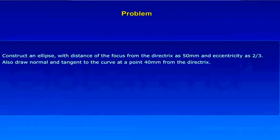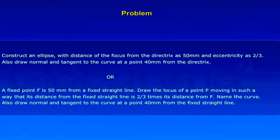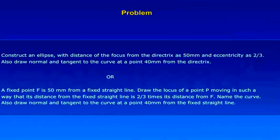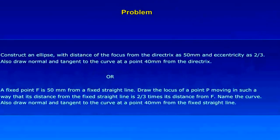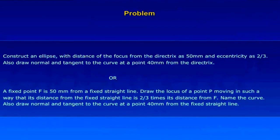Or: A fixed point F is 50 mm from a fixed straight line. Draw the locus of a point P moving in such a way that its distance from the fixed straight line is 2/3 times its distance from F. Name the curve. Also, draw normal and tangents to the curve at a point 40 mm from the fixed straight line.